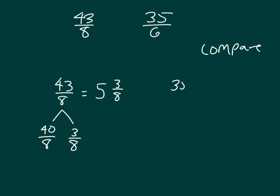35 sixths. Count by 6 sixths: 6 sixths, 12 sixths, 18 sixths, 24 sixths. That's 5 wholes, and then we have 5 sixths. Hey look, our whole portions of our mixed numbers are the same.